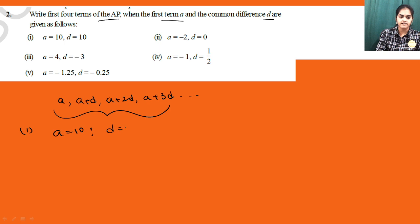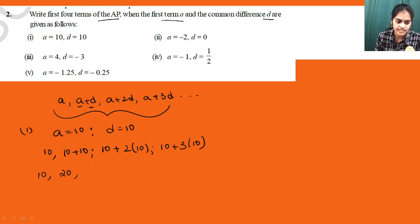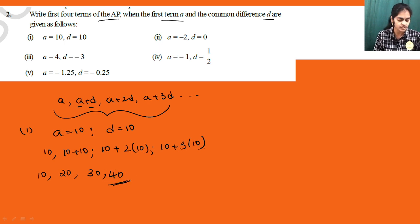The first sub-part: first term a = 10, common difference d = 10. Substituting in the formula: first term = 10, second term = 10+10 = 20, third term = 10 + 2×10 = 30, fourth term = 10 + 3×10 = 40. So the first four terms of this AP are 10, 20, 30, 40.